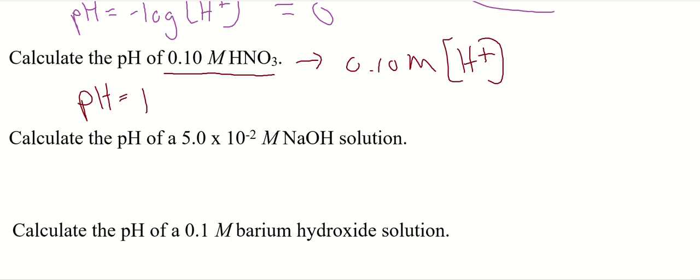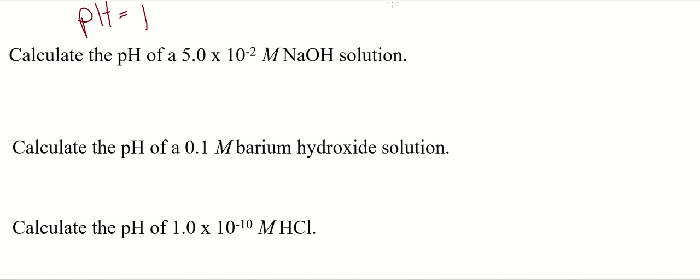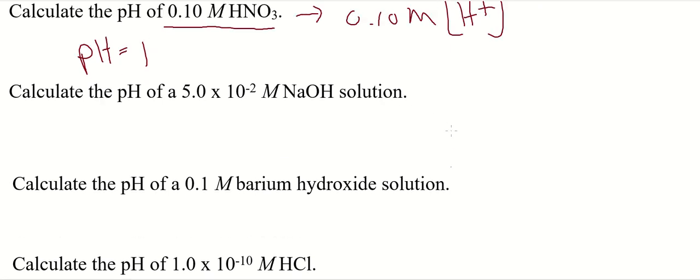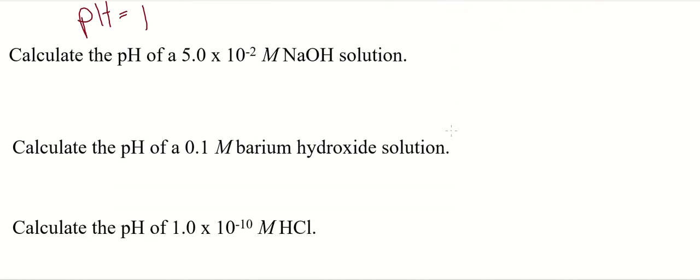Moving on here. This time we have a strong base, NaOH. This is an Arrhenius base. It's a base in any definition, and it's a strong base, so it's going to dissociate 100%. If you start with a concentration of 5 times 10 to the negative 2 molar of NaOH, you're going to get that same concentration of OH. The hydroxide concentration is the same because it completely ionizes.